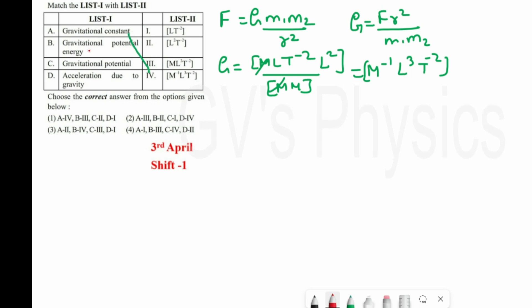Next one is gravitational potential energy. For all types of energy we have the same dimension: ML²T⁻². So we can match it directly — B matches with 3.